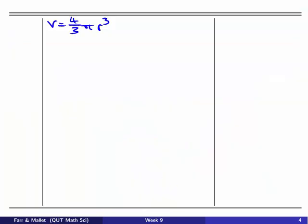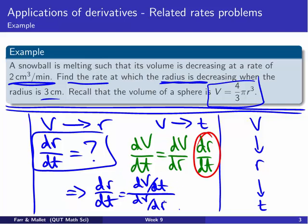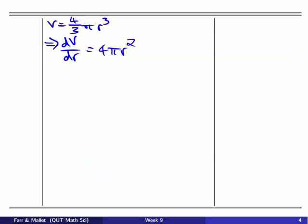So we're given in the question, or you might just know, that the volume of a sphere is 4 thirds pi r cubed. So that tells us the derivative of V with respect to r is going to be 4 thirds times 3 is just 4 pi r squared. So we've got one of those parts for our relationship up here. We've got dV/dr. But we're also told in the question that...